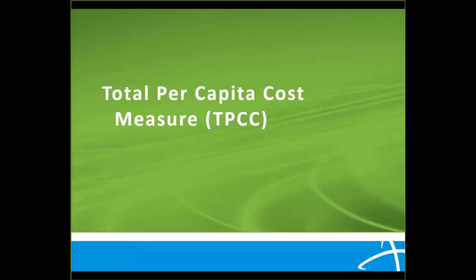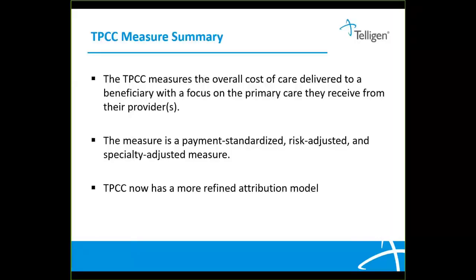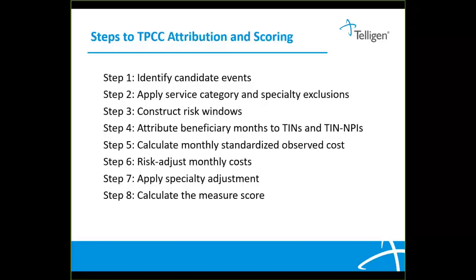Now we will look at the total per capita cost measure. The goal of this measure is to measure the overall cost of care for the patient. In 2020, this measure has new attribution methodology that will help identify primary care relationships and exclude those who don't provide primary care. The risk adjustment was also refined to account for changes in a patient's health status throughout the year. The steps for patient attribution and scoring begin with Step 1: identify candidate events. Step 2: apply service category and specialty exclusions. Step 3: construct the risk windows.